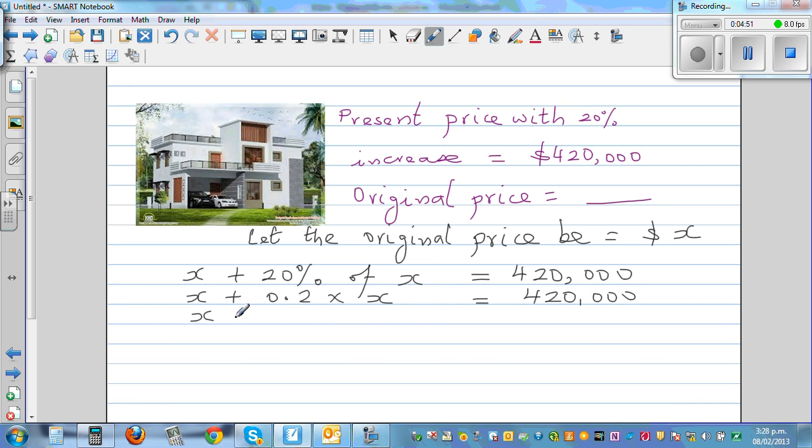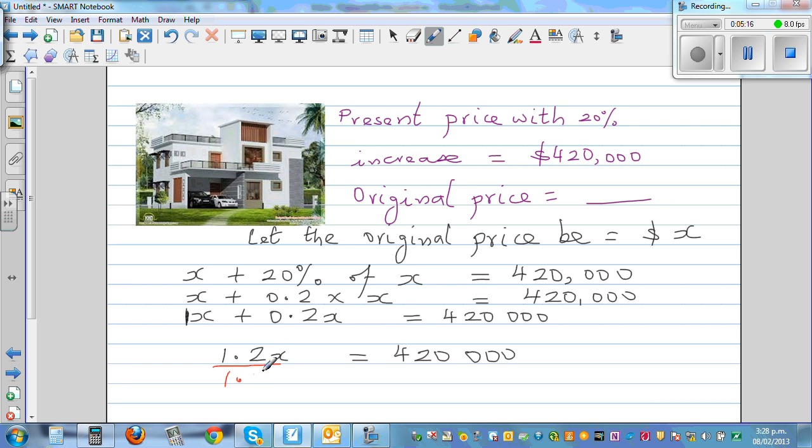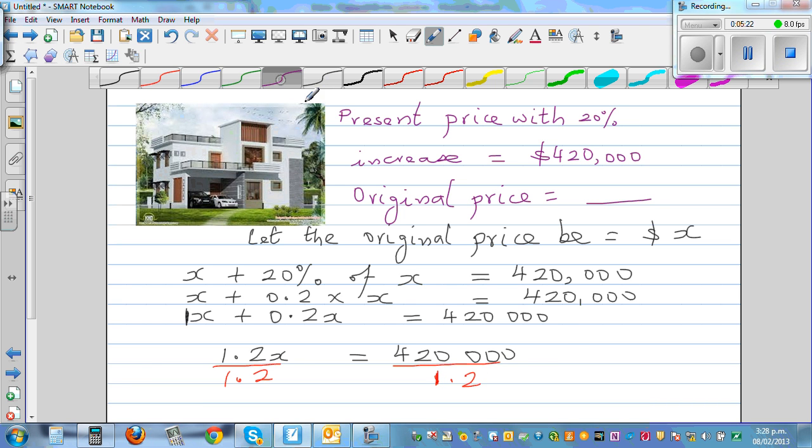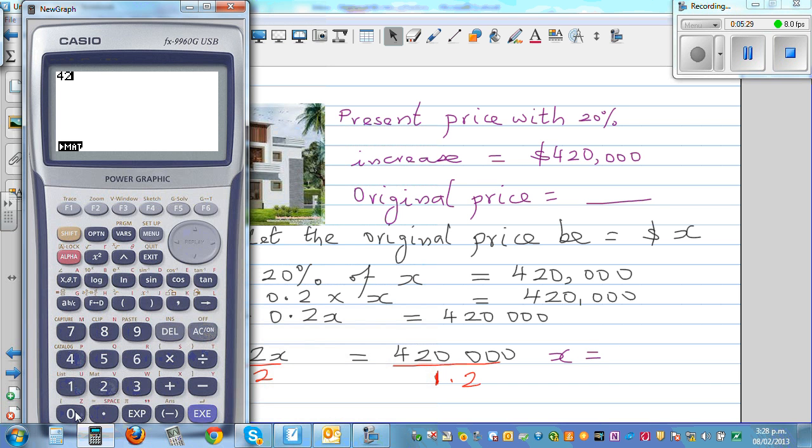This is 1X plus 0.2X, which is 1.2X equals $420,000. I want to cancel this 1.2, so I'm going to divide both sides by 1.2. $420,000 divided by 1.2 equals $350,000.